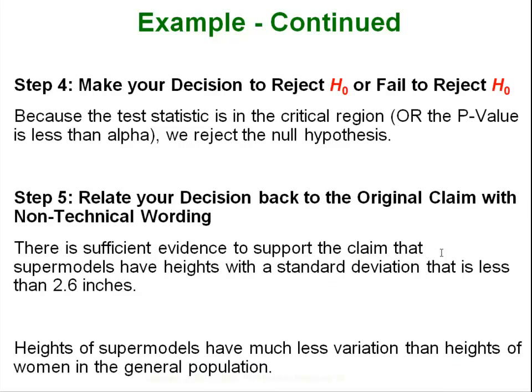So as we continue on to step 4, either from the critical value technique or the p-value technique we end up rejecting the null hypothesis. So in step 5 we want to relate that back in kind of non-technical wording and it basically tells us that there is in fact sufficient evidence to support the claim that supermodels have heights with a standard deviation less than 2.6 inches because we rejected that null which meant we were supporting the alternative and that's where our claim is. So we are supporting that claim that the heights of supermodels have less variation than the heights of women in the general population.